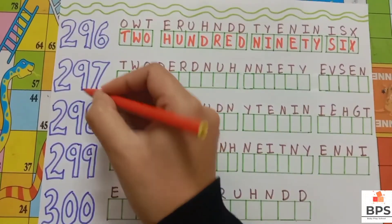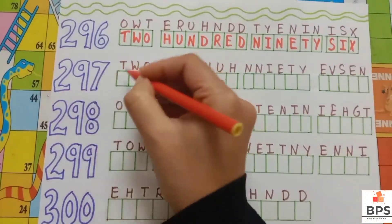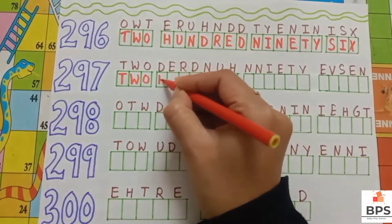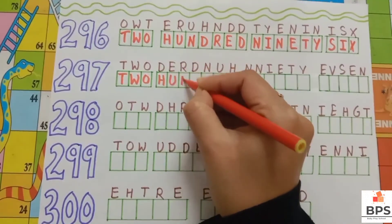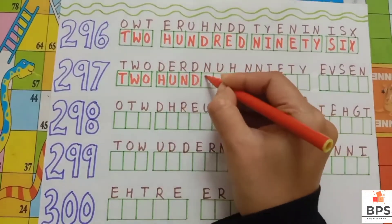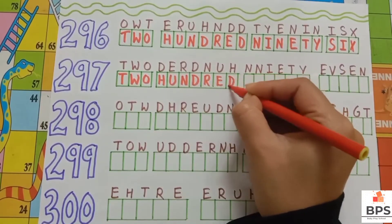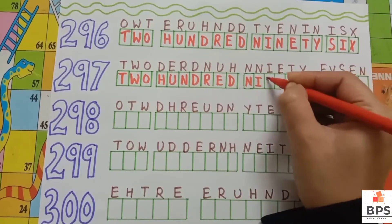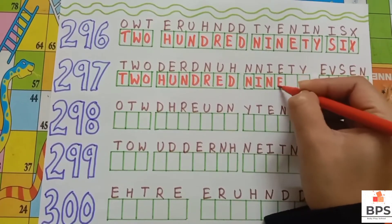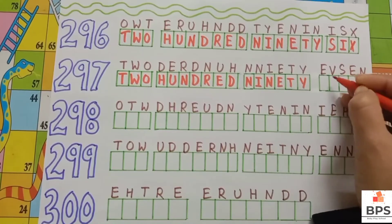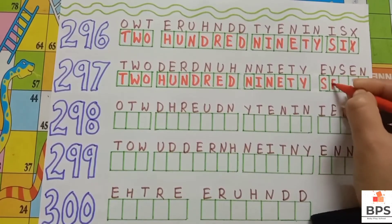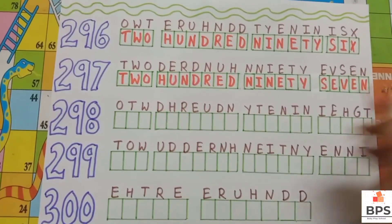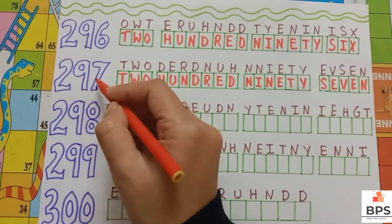Two nine seven. Two hundred ninety seven. T-W-O, two. H-U-N-D-R-E-D, hundred. N-I-N-E-T-Y, ninety. S-E-V-E-N, seven. Two hundred ninety seven.